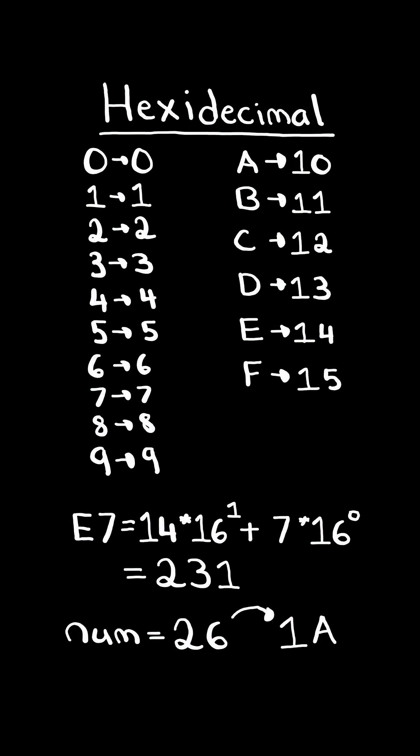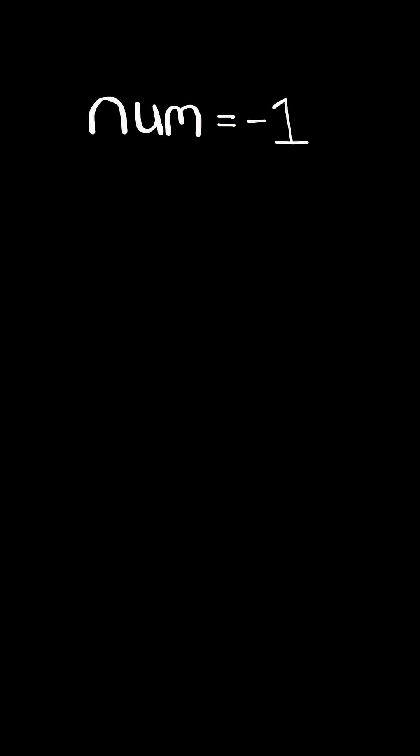For this problem, we are given a decimal number, and we want to convert it to its hexadecimal representation. One small note is that we also need to handle negative numbers. Negative numbers are typically stored using 2's complement.